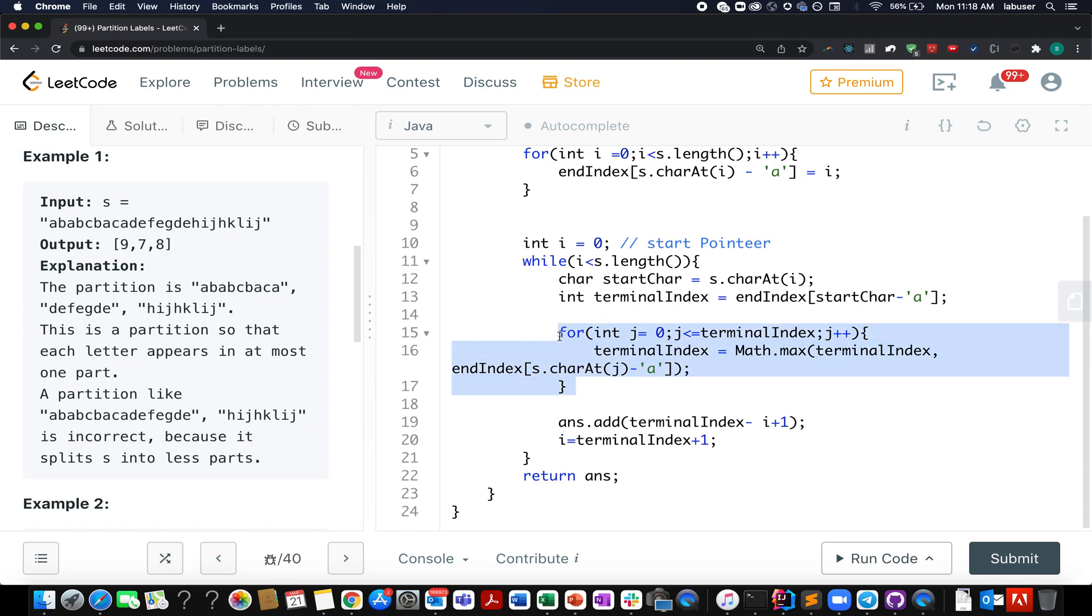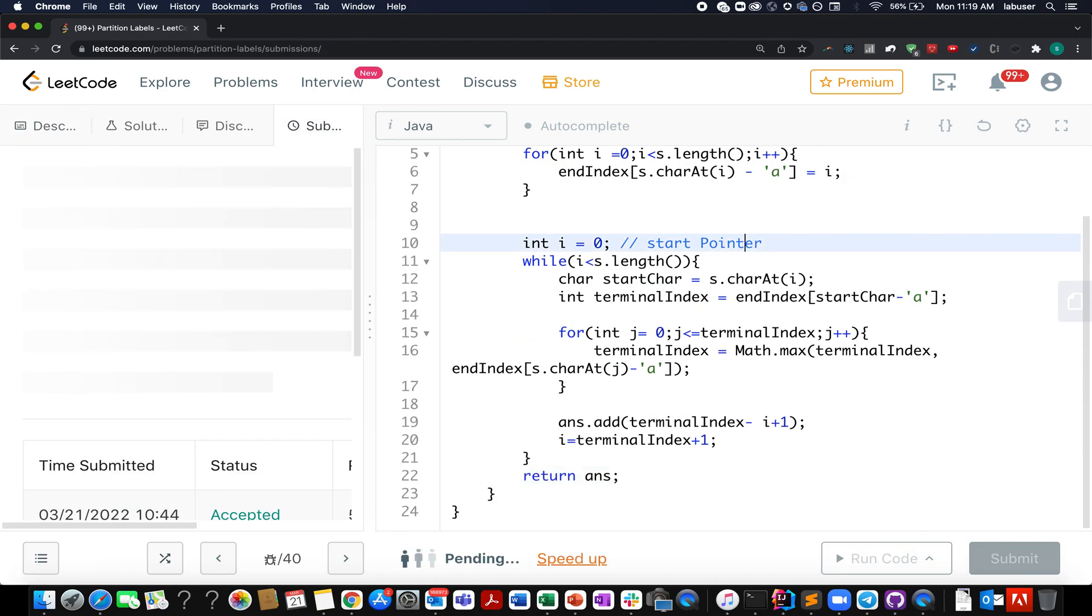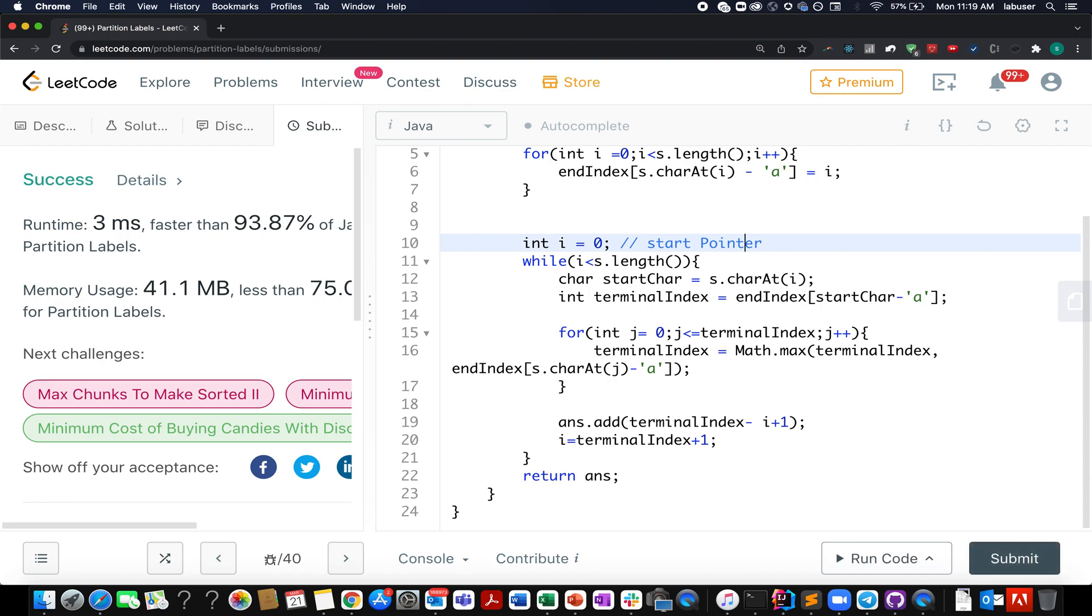Once I am done with this, I simply add to my answer that value would be equal to terminal index minus start index plus one. Moving ahead, I update i to terminal index plus one. In the end I simply return the answer variable. The time complexity here is order of n. I am restating it: from the look of it, it may appear it is order of n square, but it is not.